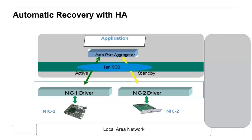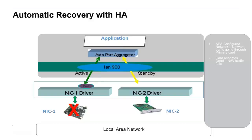Let us take a look at the diagram which shows the working of the automatic recovery feature on an HPUX server with APA configuration. This diagram shows a sample LAN monitor configuration. We demonstrate how the adapter gets recovered from dead state once the automatic recovery feature is installed. This is a sample APA configuration with active and standby ports on LAN 900. The traffic is flowing through the active port. In the next step, we notice that the adapter has got an error and the driver moves to dead state. The driver sends the event to the upper layers and APA fails over to the standby port.